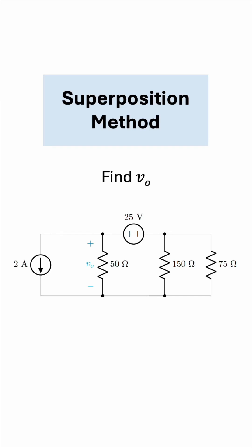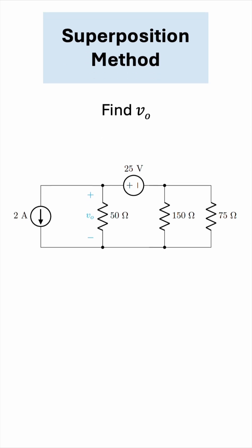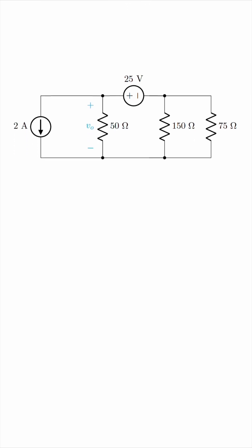Using superposition, let's find V0 in the circuit below. The superposition principle tells you that in a linear system like the circuit shown, you can consider the effect of each independent source separately.